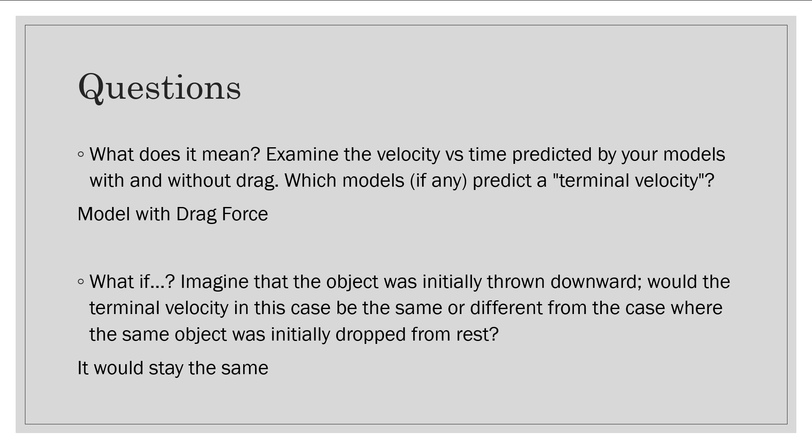Imagine that the object was initially thrown downwards. Would the terminal velocity in this case be the same or different from the case where the object was initially dropped from rest? It would stay the same because no matter what happens, it would balance out with gravity. As long as the objects remain the same, the terminal velocity would also remain the same.